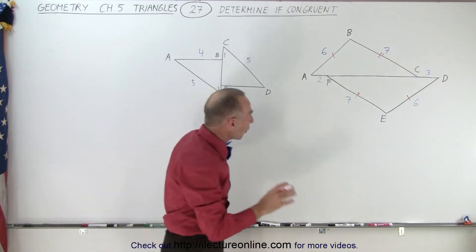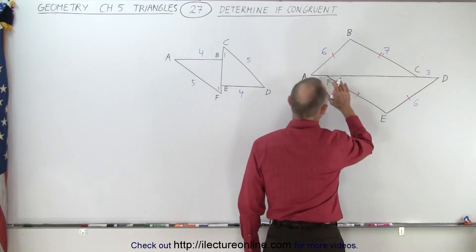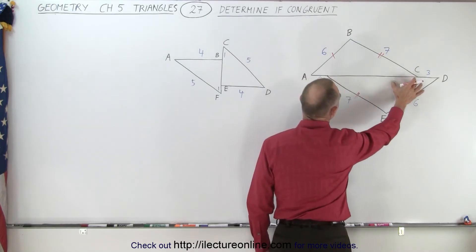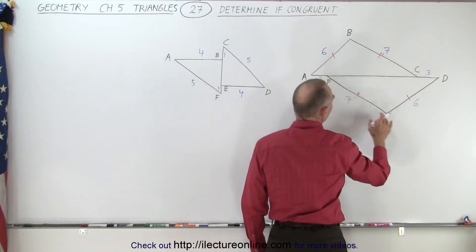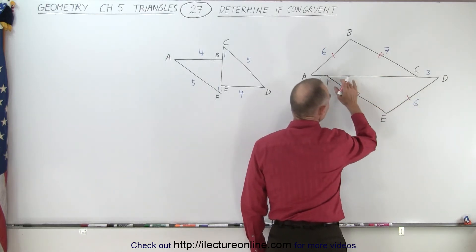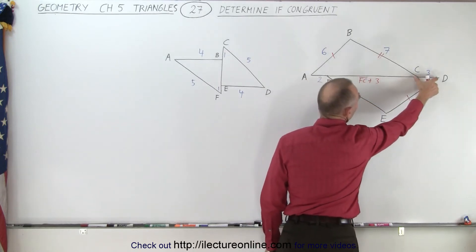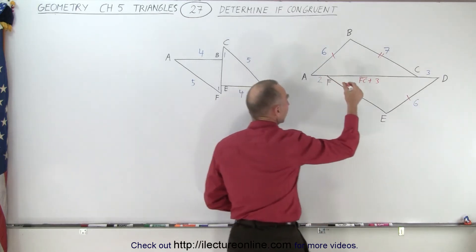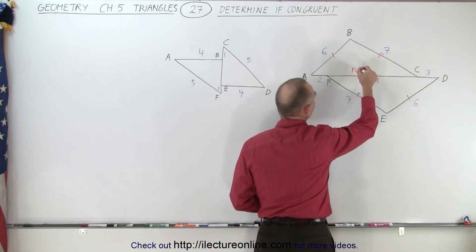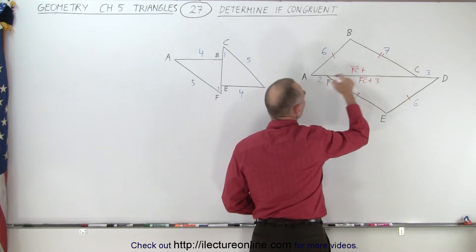And now you can see that there's a partial overlap. The section from F to C is common for both. But for the bottom triangle it would be F to C, so we have FC plus 3 for this little piece right there. For the top triangle we have FC plus 2.